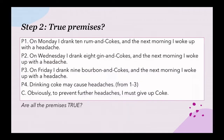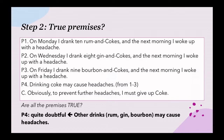Now we move to step two: evaluating the premises to see if we have good reason to accept or reject them. We have to evaluate each of the premises. Assuming that premise one is true — it's true that on Monday I drank rum and coke and woke up with a headache — and premise two and three are true. But premise four is quite doubtful, because maybe all the factors like gin, rum, or bourbon may cause headaches, not just coke.